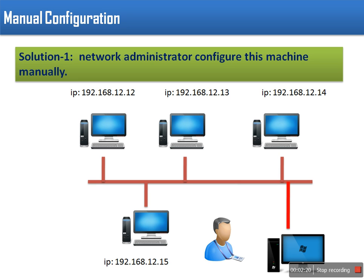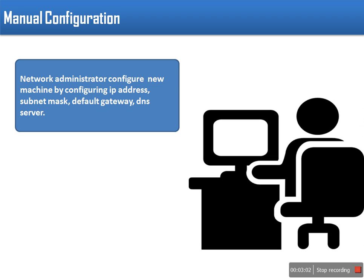The problem with manual configuration is that there are chances of errors. It might be possible that this person forgot which IP address has been already allotted and assigns the same IP address to a new machine, or while entering the IP address that person might make some error. And this machine will get wrong IP address or wrong network details, and this system cannot access network services.